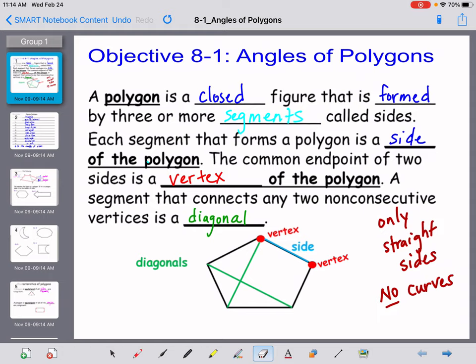The common endpoint of two sides is a vertex of the polygon. A segment that connects any two non-consecutive vertices is a diagonal. In our image you see that the diagonals are in green, the vertex is in red, and then a side is in light blue.